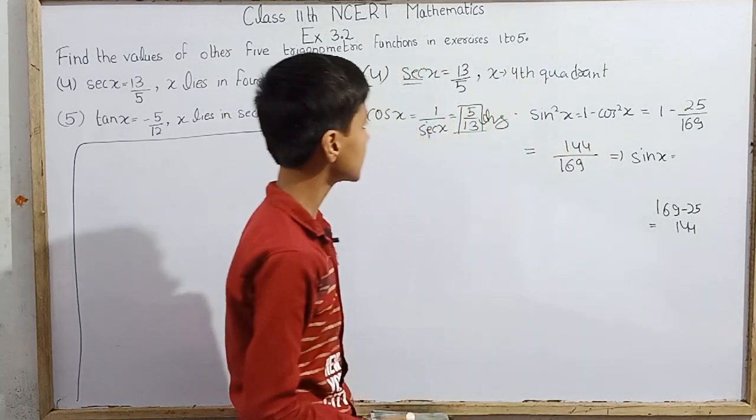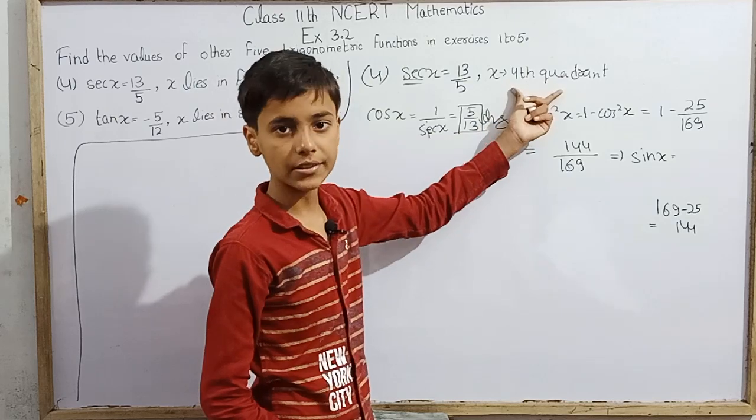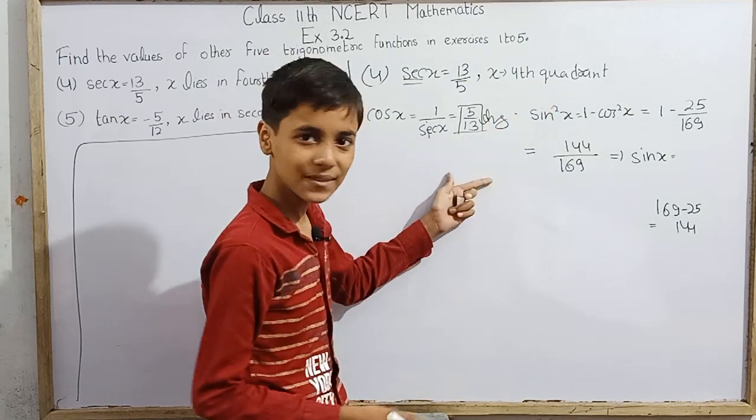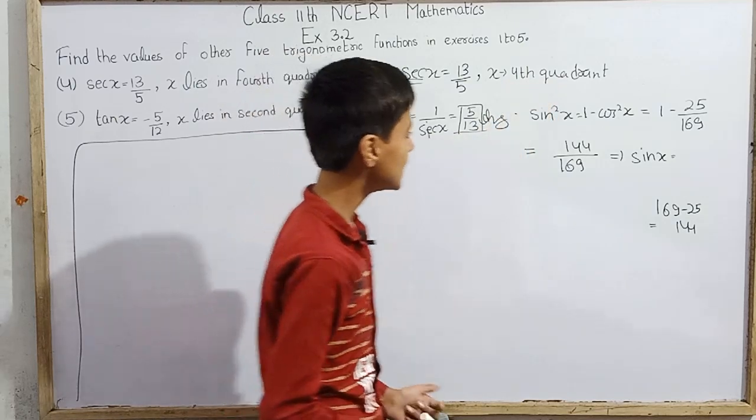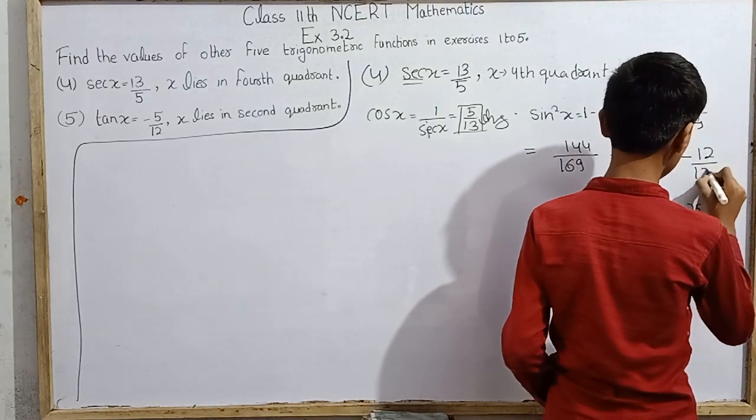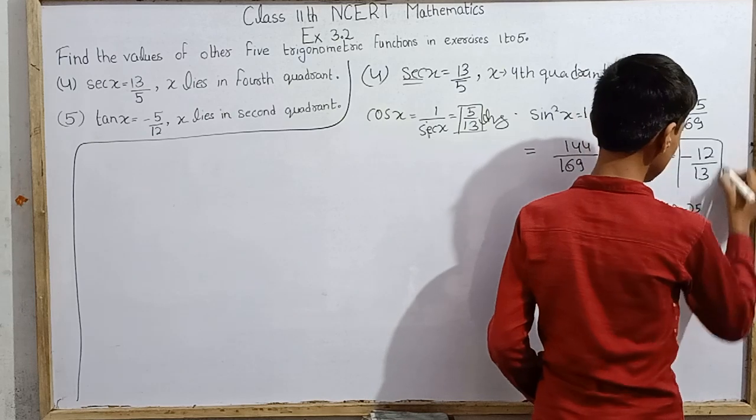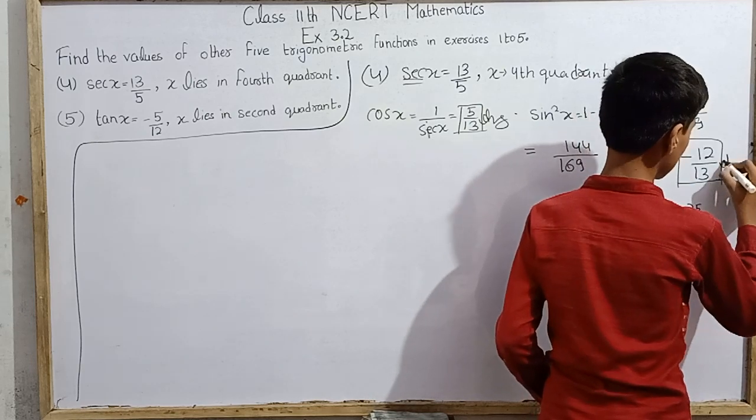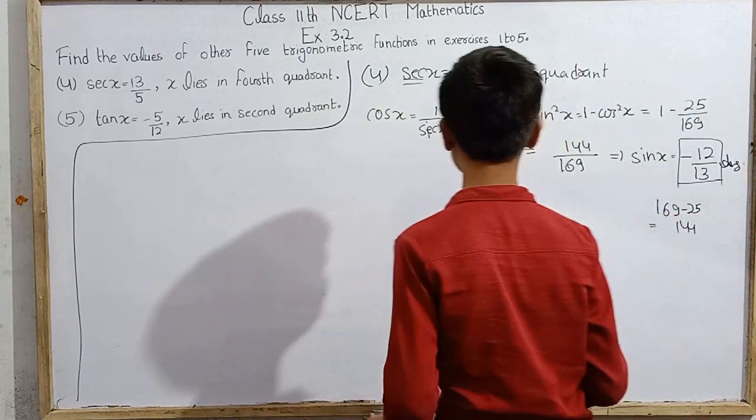Since x is in the fourth quadrant, according to the ASTC rule, the sine function will be negative. So sin x equals minus 12 over 13. This is our answer. We got sin x successfully.